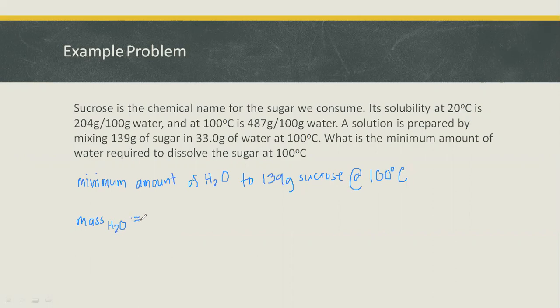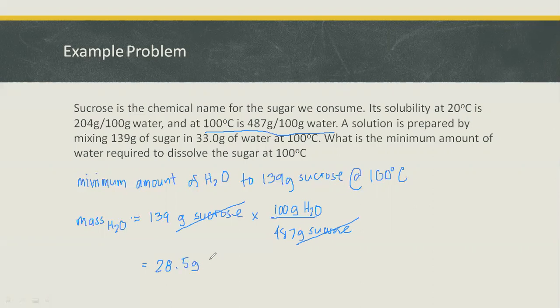So mass of water required is equal to 139 gram of sucrose which needs to be dissolved at 100 degrees Celsius. So let's multiply this one with the solubility factor at 100 degrees Celsius which is 487 gram per 100 grams of water. So we have to eliminate the unit gram. So let's multiply this one by 100 gram of water over 487 gram of sucrose. So now we can cancel gram. Therefore, the mass required to dissolve 139 grams of sucrose is 28.5 gram of H2O.